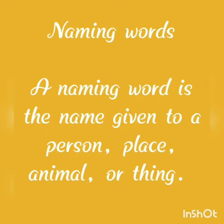Matlab, हम जहाँ पर भी जाते हैं किसी place या किसी भी person का नाम या animal or things — यह सारे different होते हैं और हर एक को एक name होता है। So, that is called naming words.